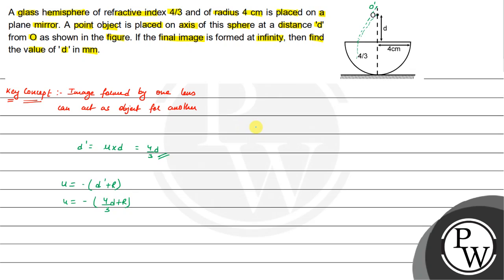Now, we have to use the spherical curved surfaces formula: mu_2 upon v minus mu_1 upon u equals to mu_2 minus mu_1 upon r. Since this curved surface is acting like a concave surface, therefore it will be minus r.